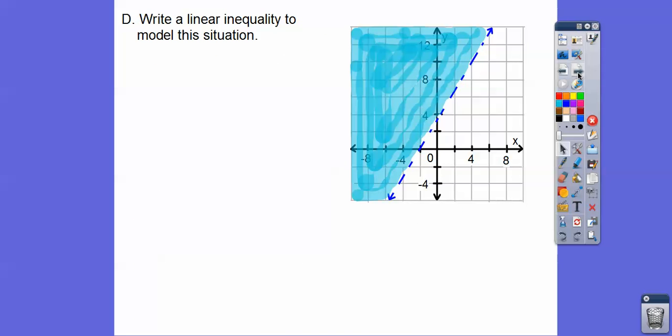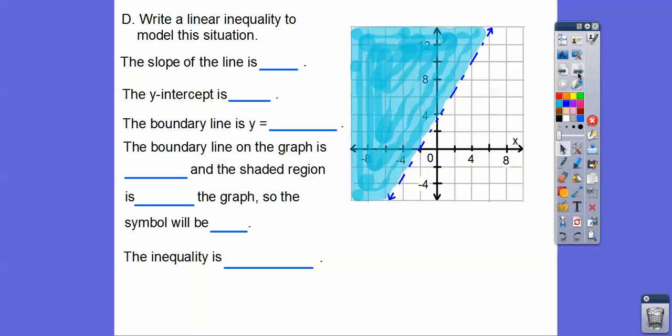All right, so here where they want us to write a linear inequality that models this situation right here. Then they give us a series of questions right here. So the slope of this line, let's pick a known point right here.